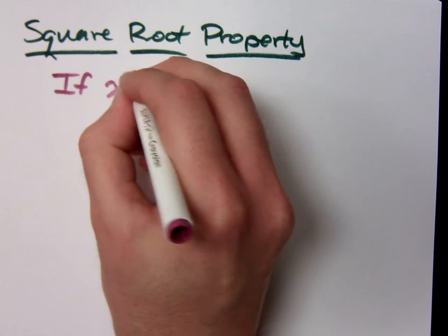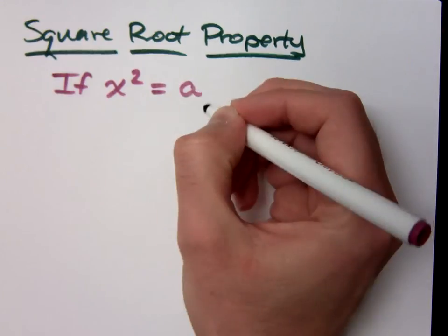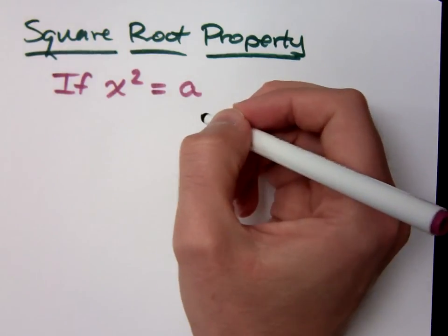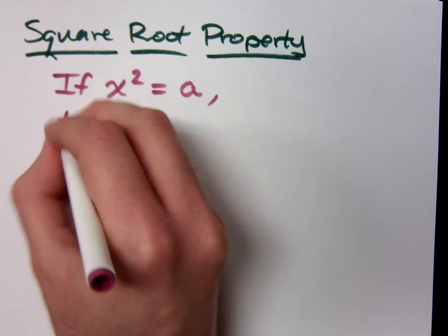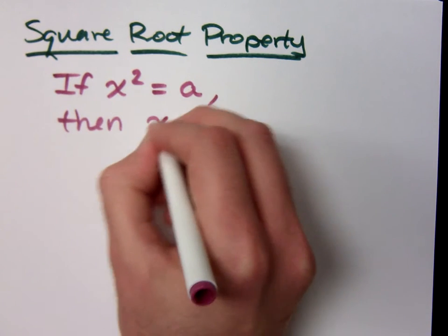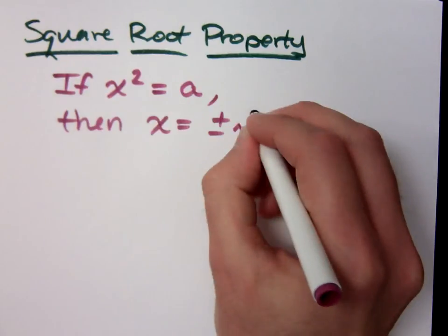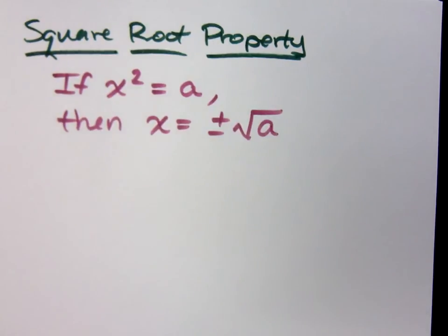If you have x squared equal to a number - now when I say x squared, I mean just a variable expression that's squared equal to a number - then your solutions will be given by plus or minus the square root of a.